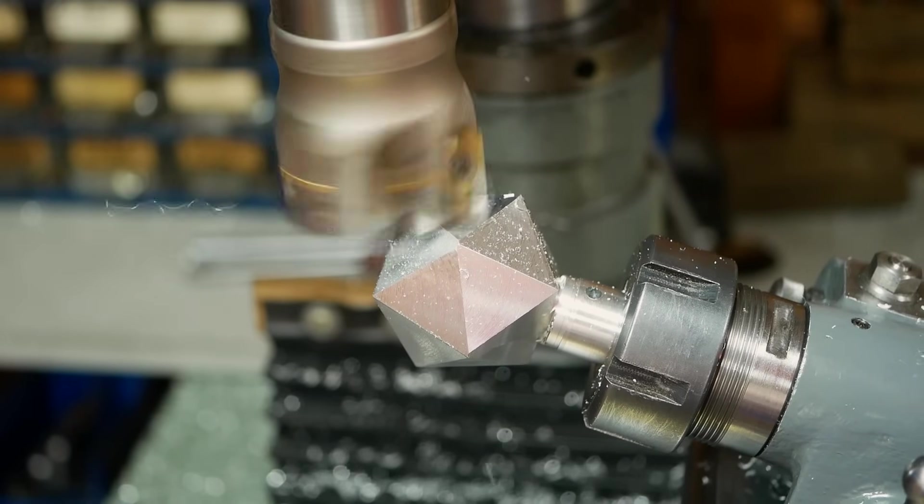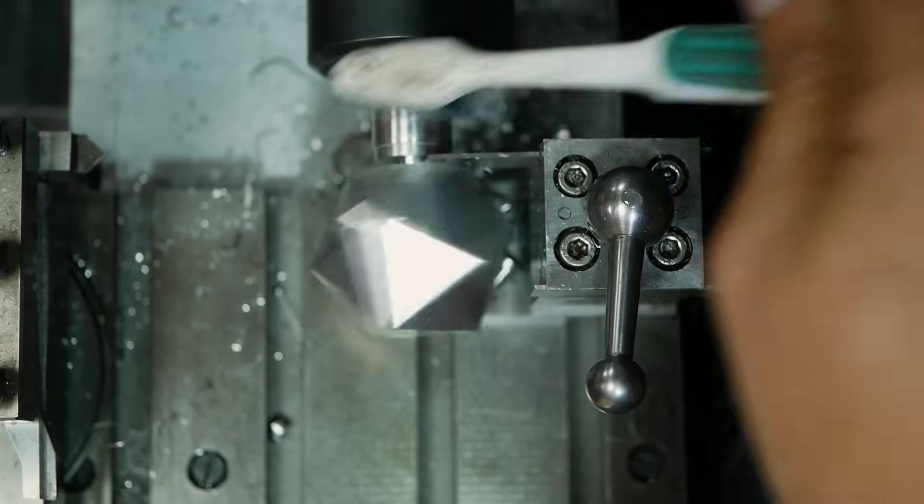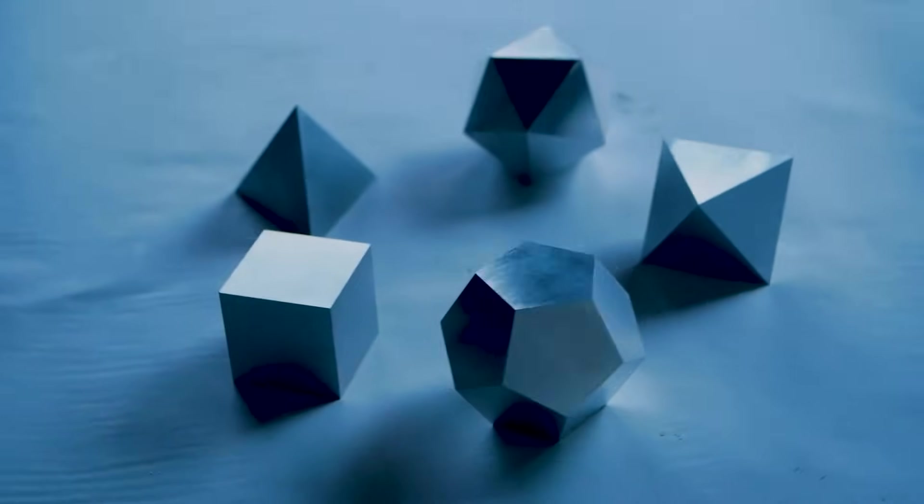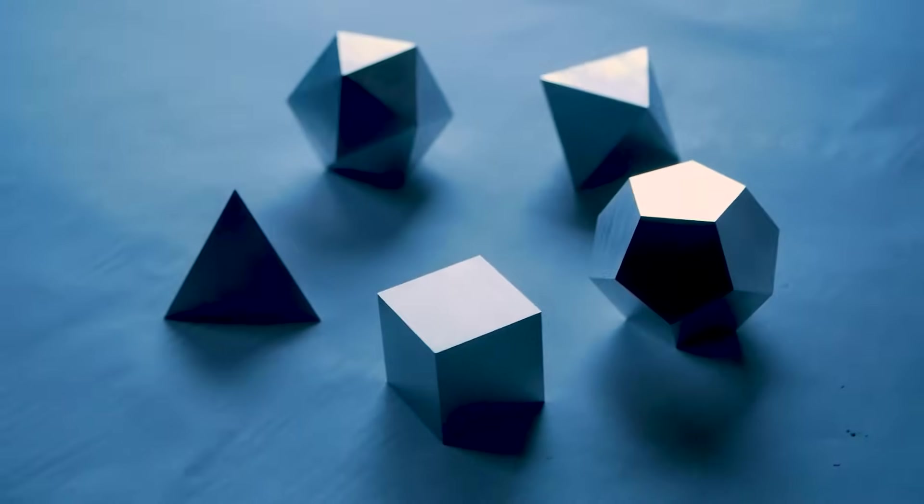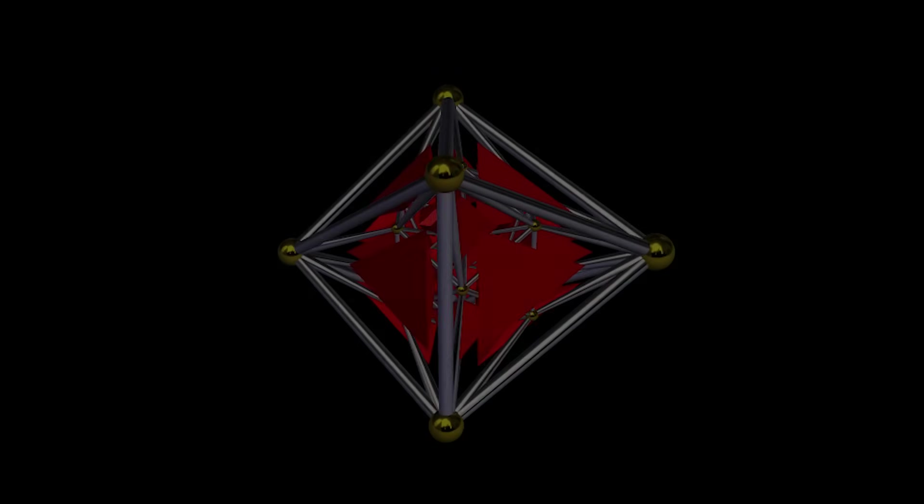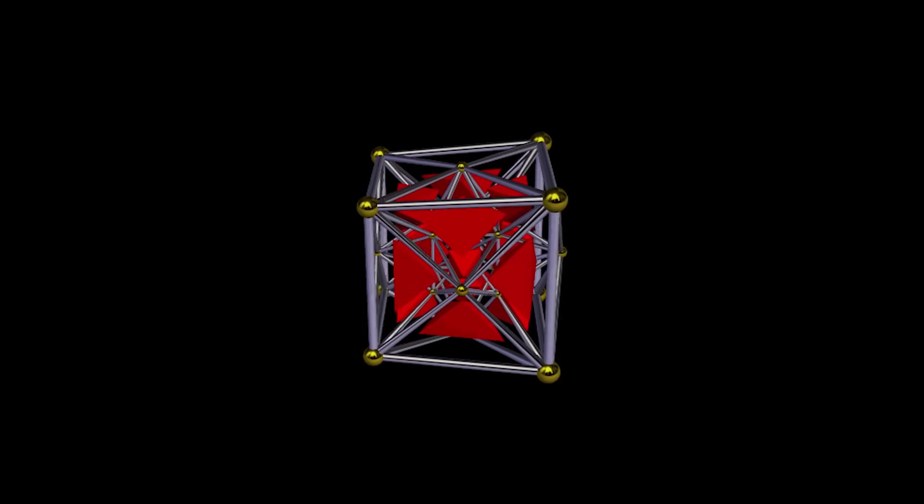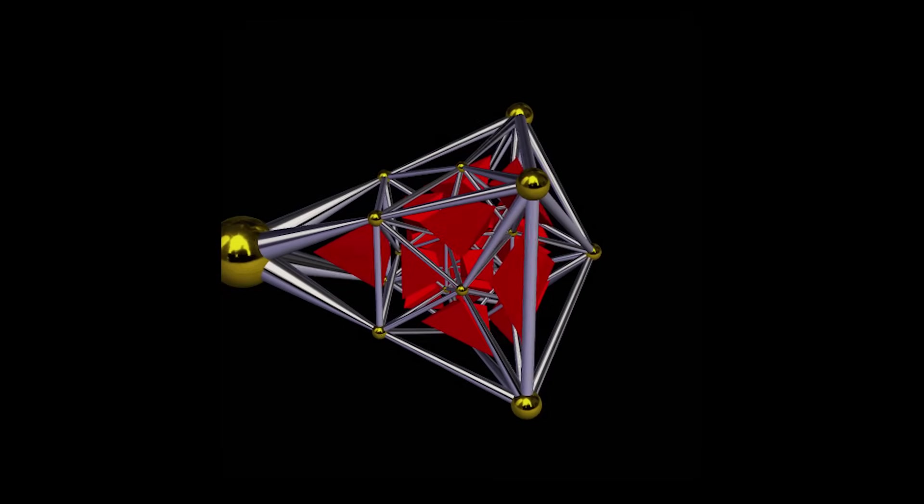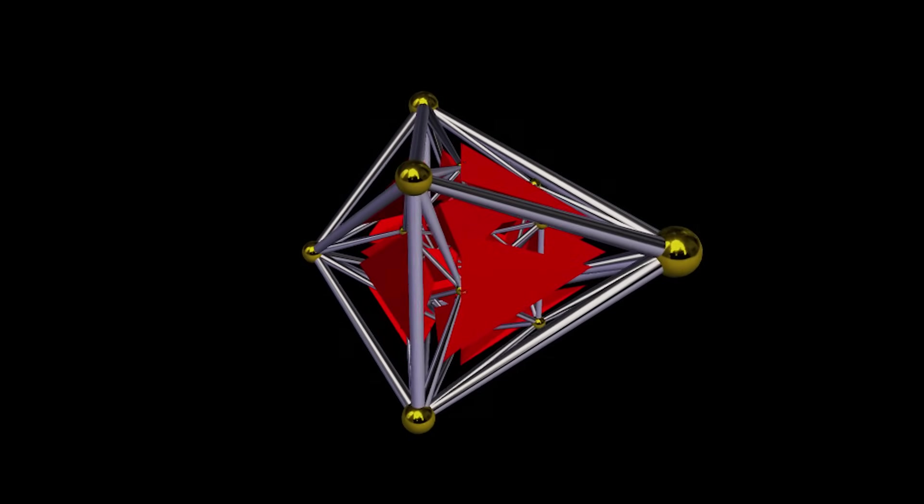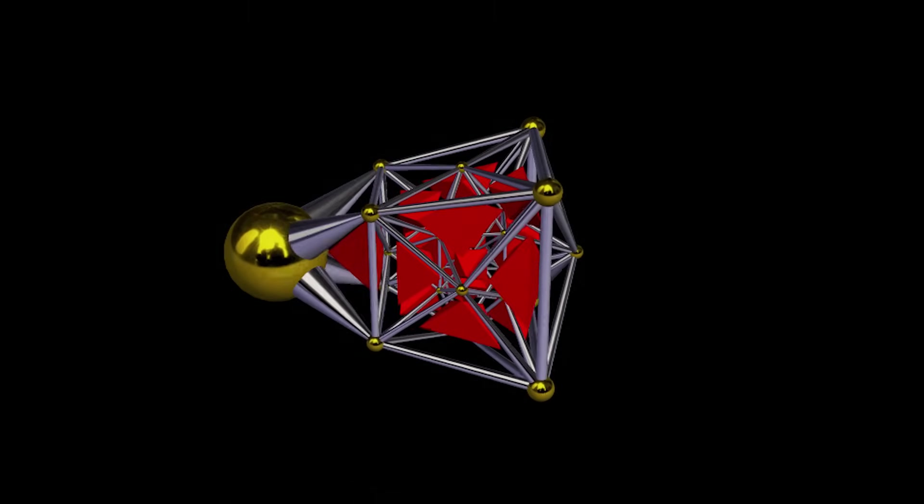We have now reached the end of the platonic solids. Hexagons may be the bestagons, but the fact that they tile so well actually makes it impossible to fold a net of hexagons into a regular 3D shape. However, if we continue the series of regular polytopes into 4 dimensions, another shape emerges. This is a 24-cell, or octoplex. It's special because it doesn't have a 3D analogue, and it's also self-dual, meaning if you constructed a shape from dots drawn on the center of each of its faces, you would end up with another octoplex.